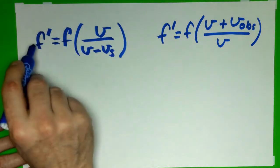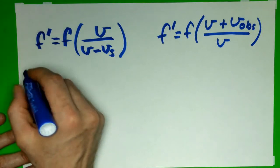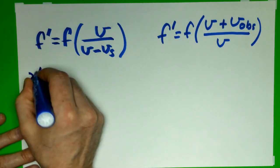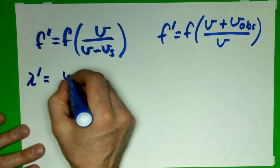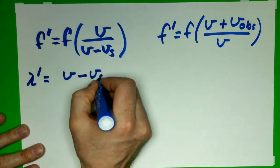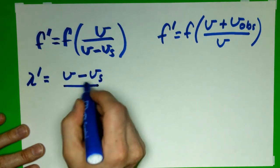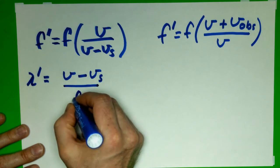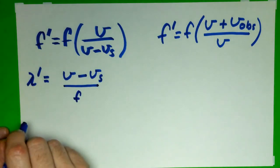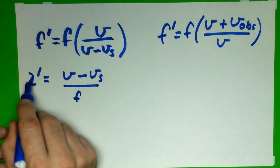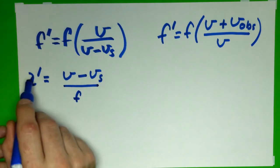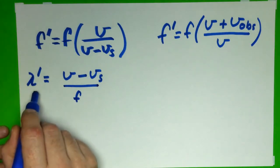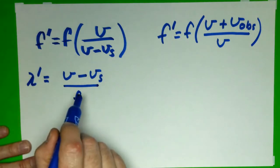When deriving this one, we found that the perceived wavelength changed. It was V minus Vs over the true frequency. That was our perceived wavelength. That's what changed. There were actually fewer air molecules between wavefronts in the case of the source moving towards the observer.